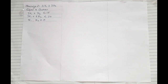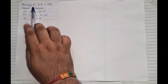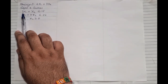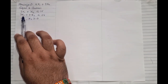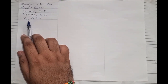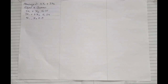The first question reads: Maximize Z = 4x1 + 3x2, subject to the constraints: 3x1 + x2 ≤ 15, 3x1 + 4x2 ≤ 24, and the non-negativity condition x1, x2 ≥ 0.